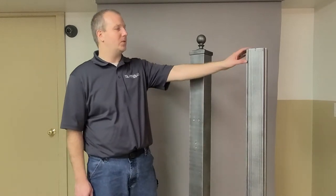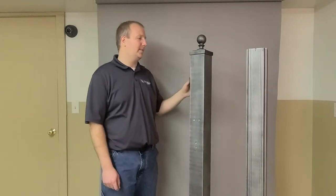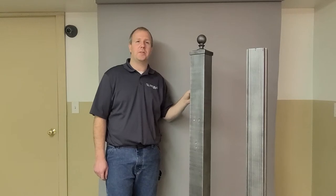The SPK 700 is a fluted square post. The SPK 710 is a smooth square post. Other than that, the components go together the same way for both posts.